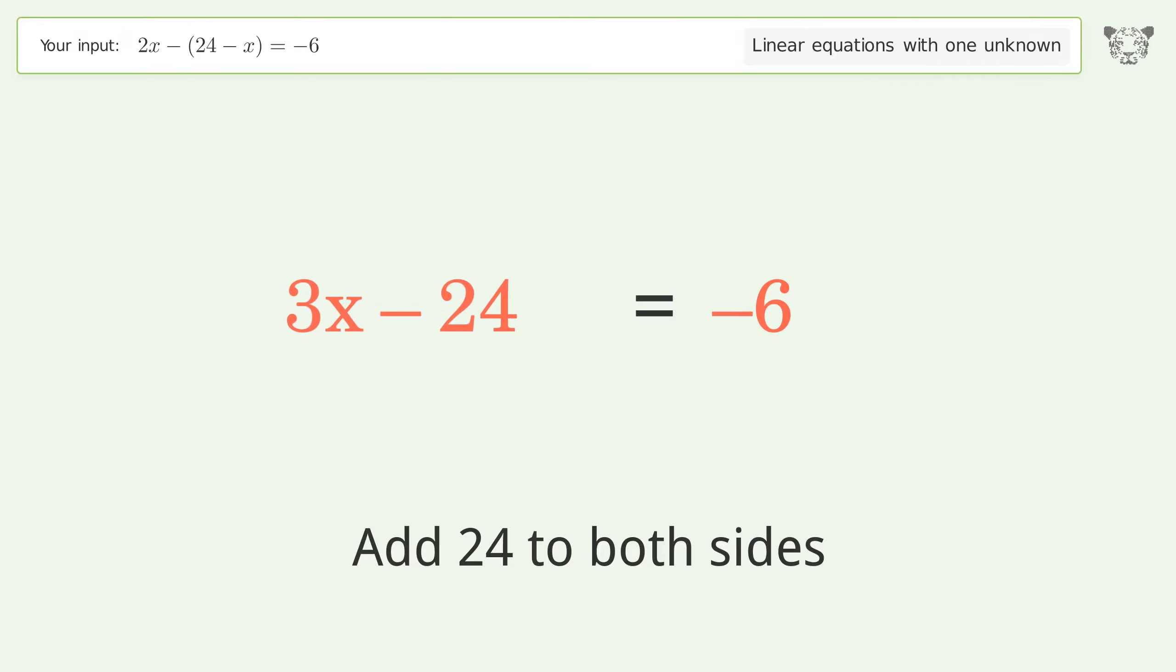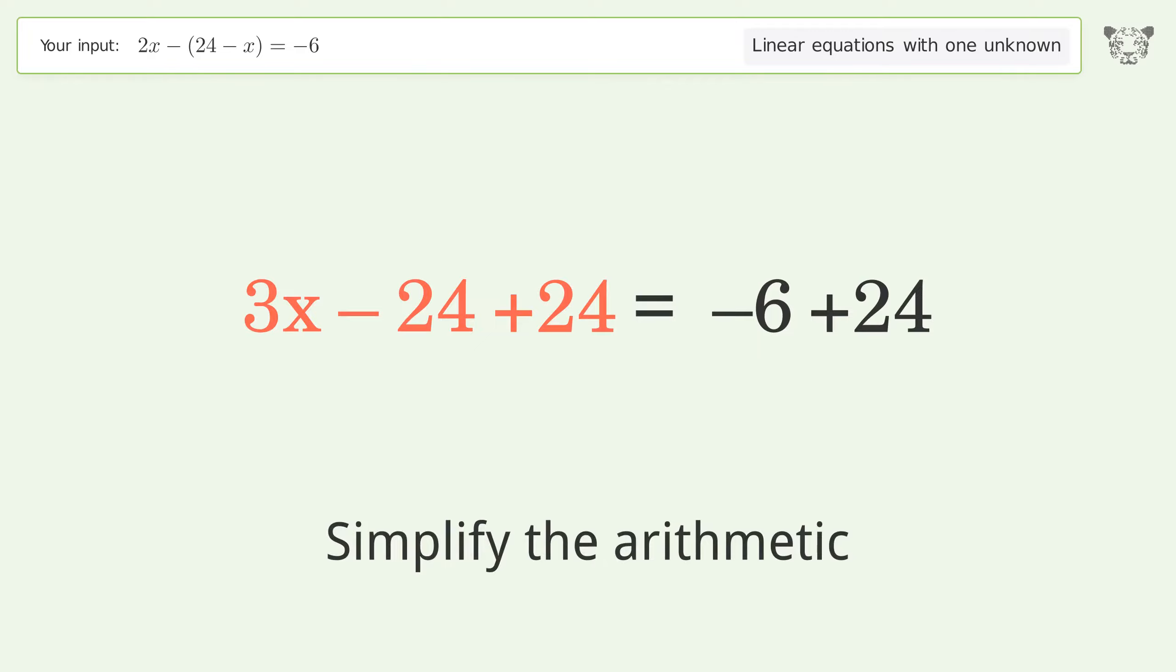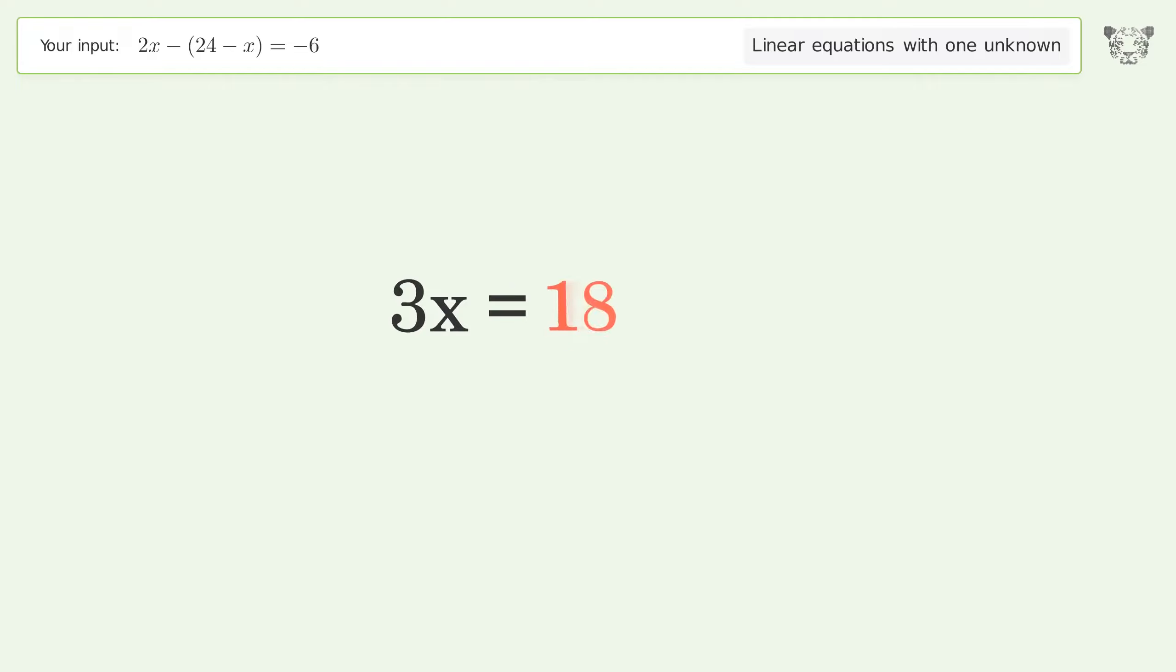Group all constants on the right side of the equation. Add 24 to both sides. Simplify the arithmetic.